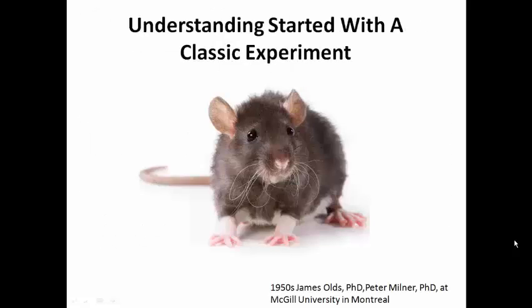Decades ago, this was discovered — where the pleasure center was in the brain — and it was discovered by accident. This was done by two scientists named Milner and Olds, and they were looking at rats. They wanted to understand in a rat's brain how the rat goes to sleep and how it wakes up. So what they did was use an electrical wire — since our brain runs on electricity — and they stimulated different parts of the brain, trying to figure out: if we touch this part of the brain, what will happen? Could we make the animal fall asleep or wake up?